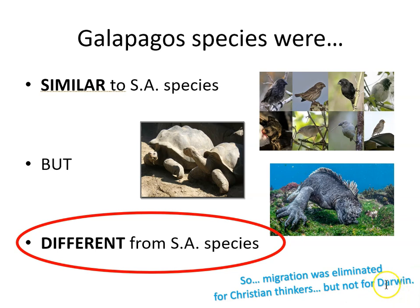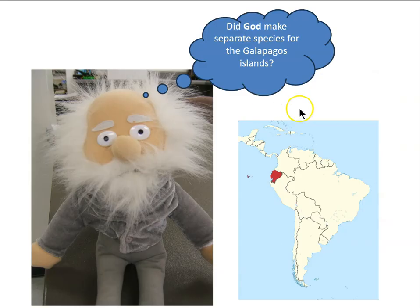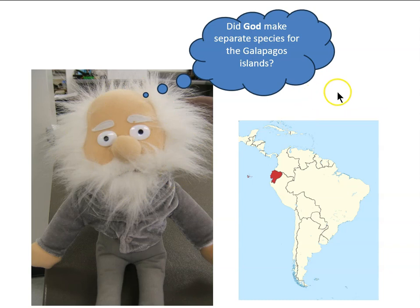Why were the Galapagos species similar to South American species, but also different? Darwin entertained the Christian thinking — after all, as a young man he embraced much of the Christian worldview about species origin. So the question in his mind was: did God make separate species for the Galapagos Islands?